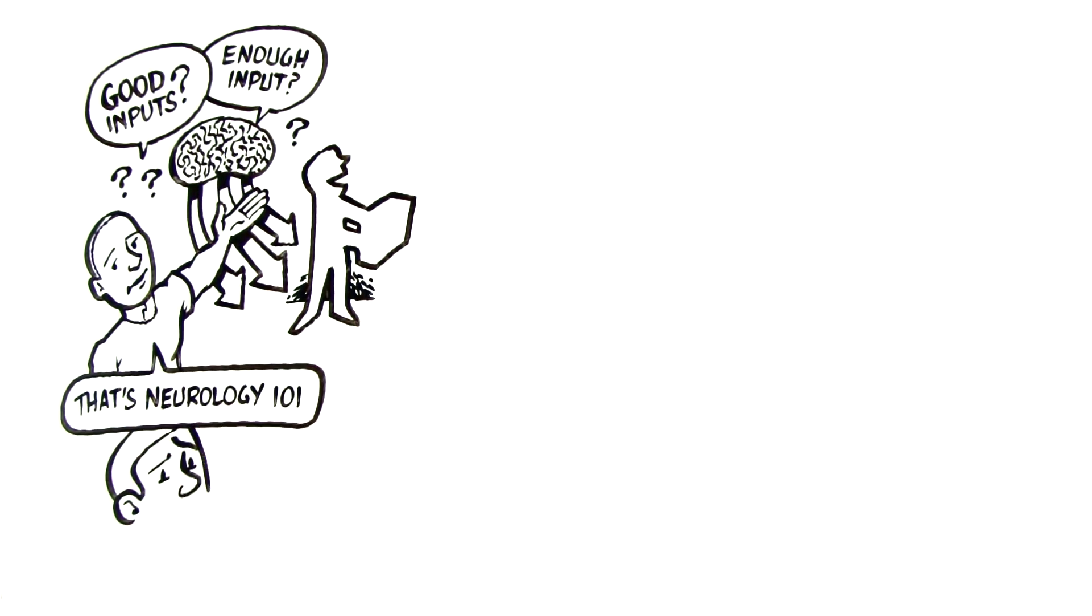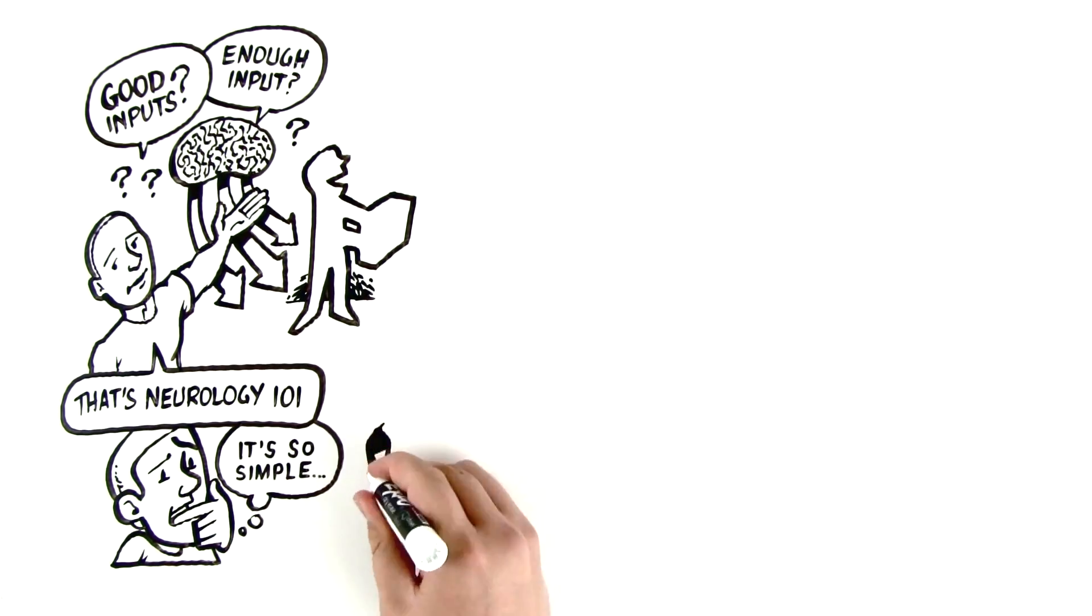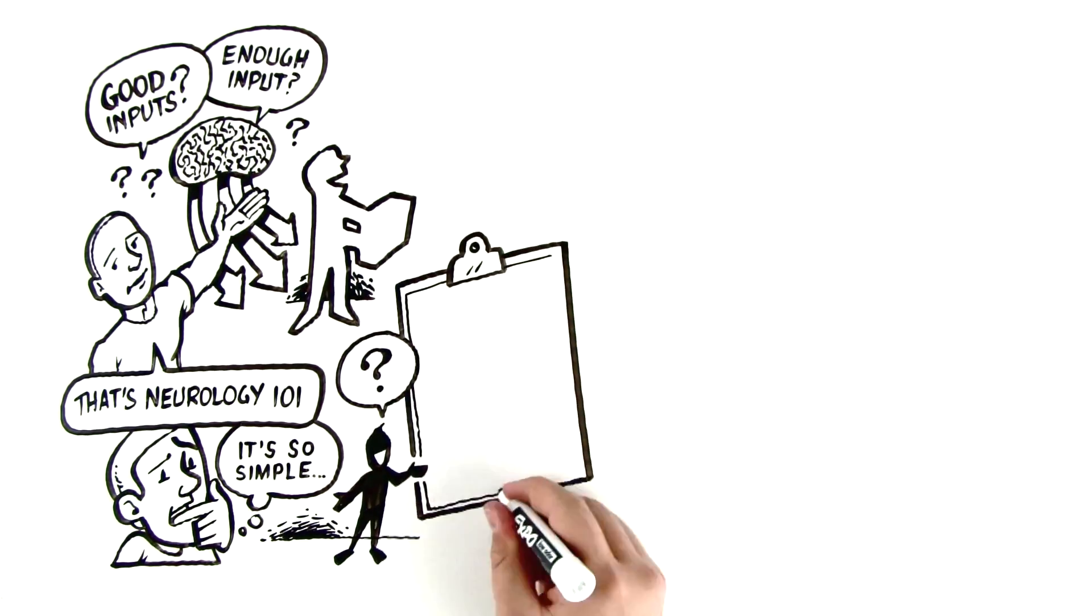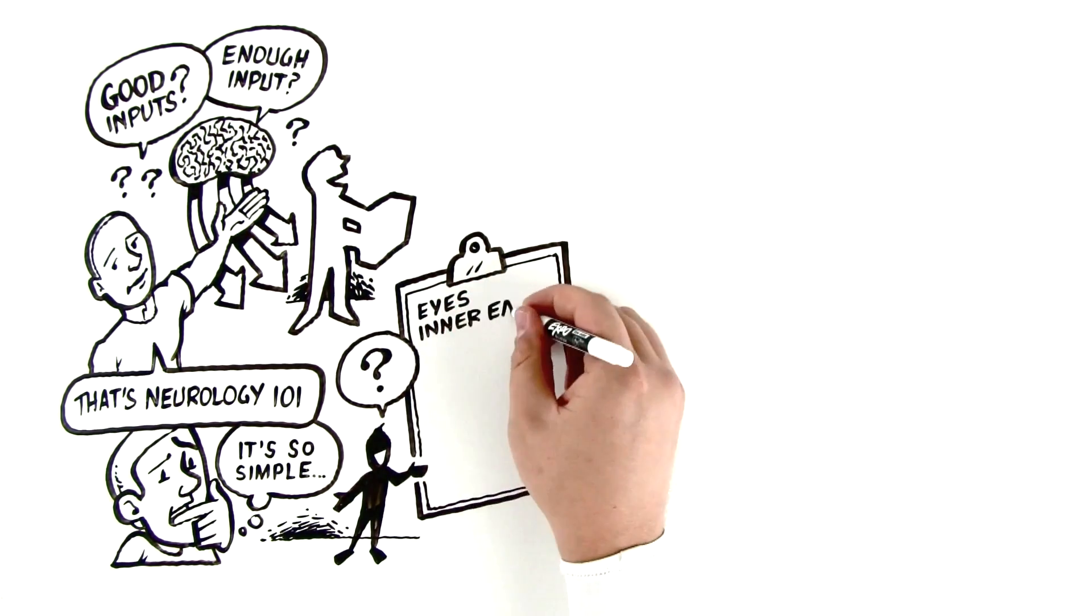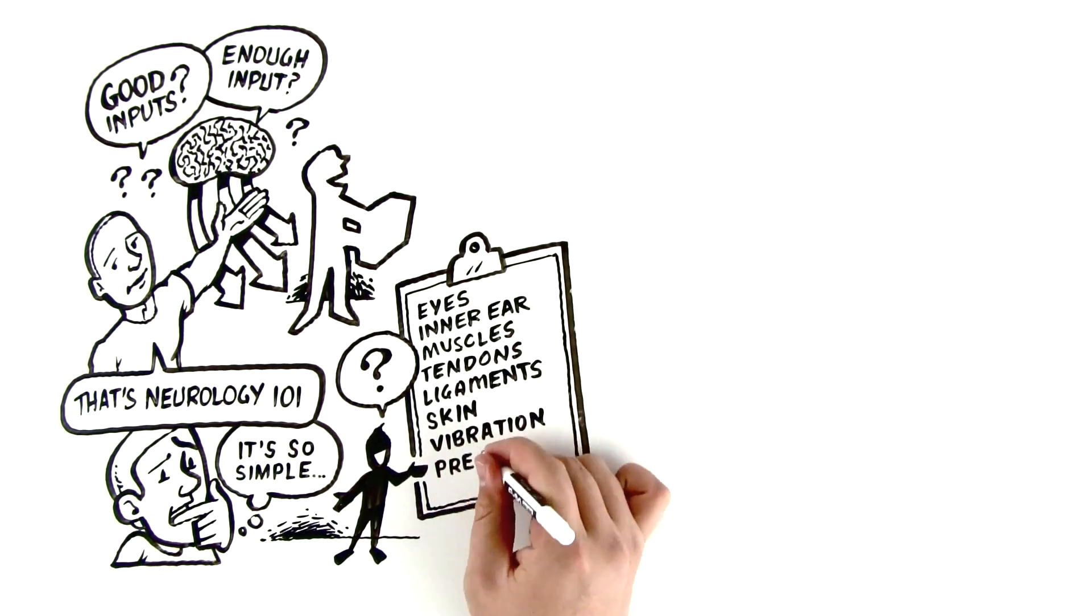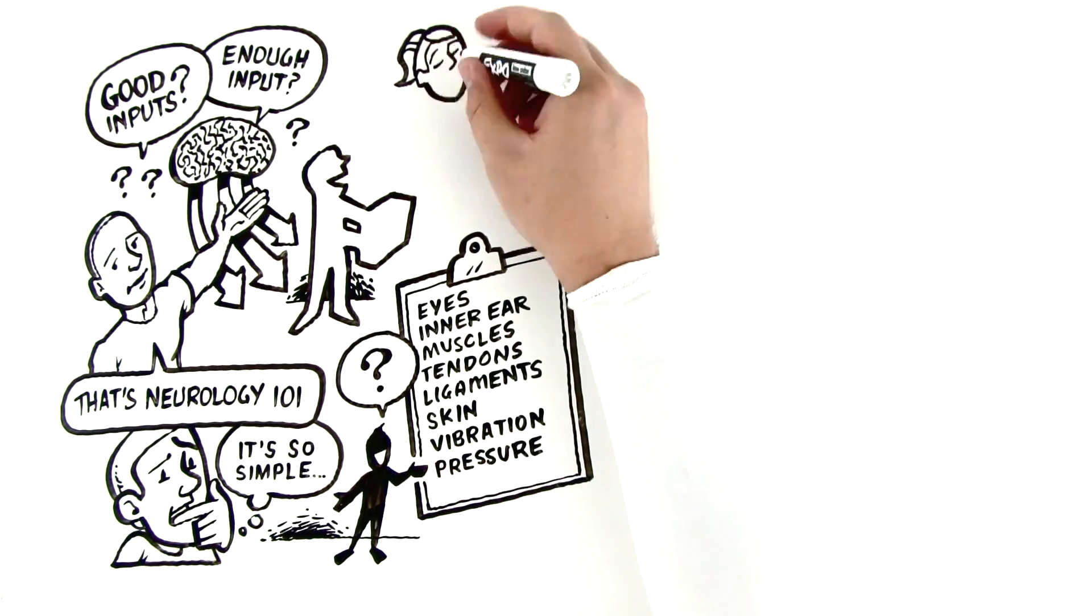So, as simple as I make that sound, hopefully this starts to explain why we do what we do. Because if I look at the human body, I go, what are the different ways that I can receive input? I can get it through my eyes. I can get it through my inner ear. I can get it through my muscles, my tendons, my ligaments, my skin. I can sense vibration and pressure and all of those different things.